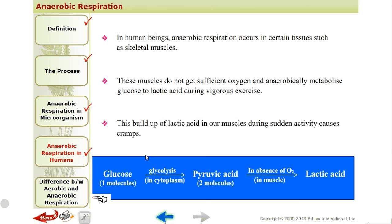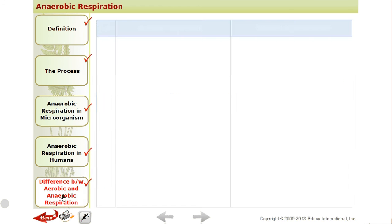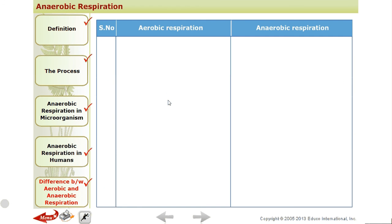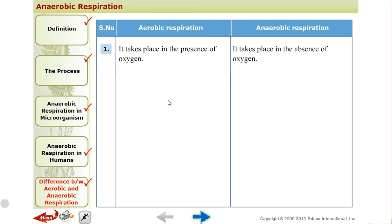Glucose undergoes glycolysis to form pyruvic acid — this step is common. In the absence or lack of oxygen, lactic acid is formed, and energy is reduced. Now we will see the difference between aerobic and anaerobic respiration.